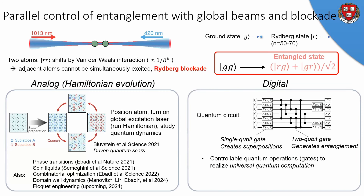We want to do digital operations in order to be able to do error correction. When we do things digitally, we have a quantum circuit decomposed into qubits — here at each individual line — as well as gates: fundamental building blocks like a single-qubit gate, which creates superpositions, or a two-qubit gate, which generates entanglement. We want to realize these controllable quantum operations in order to in principle do universal quantum computation. Although there are many degrees of freedom in the system, we still really want to keep this efficient classical control.